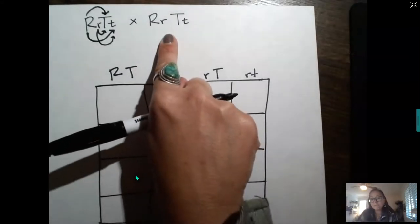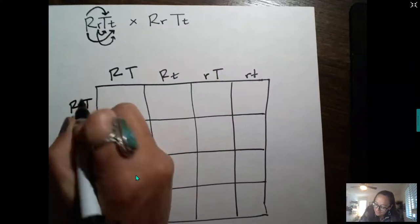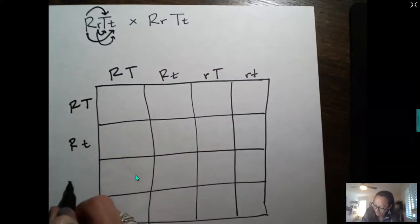Now this genotype of parent 2 is the same. So we're just going to go ahead and write these possibilities of the gametes along the side.